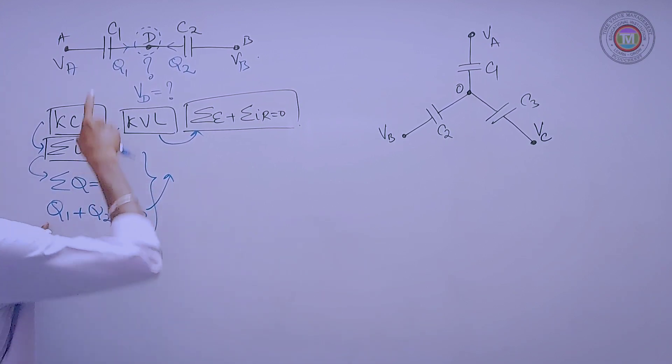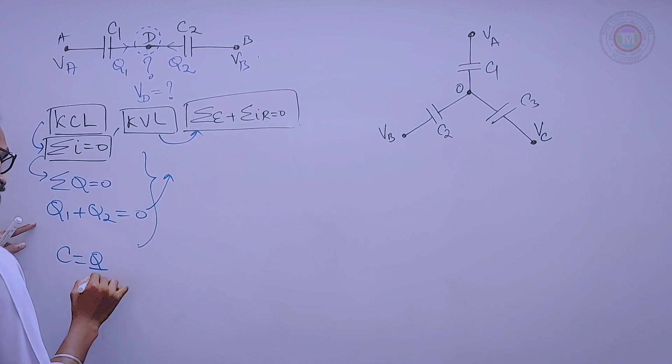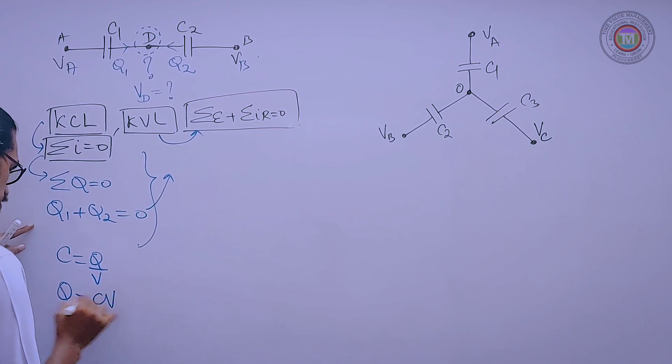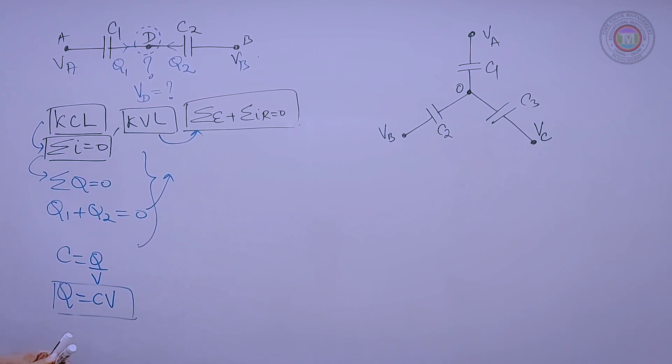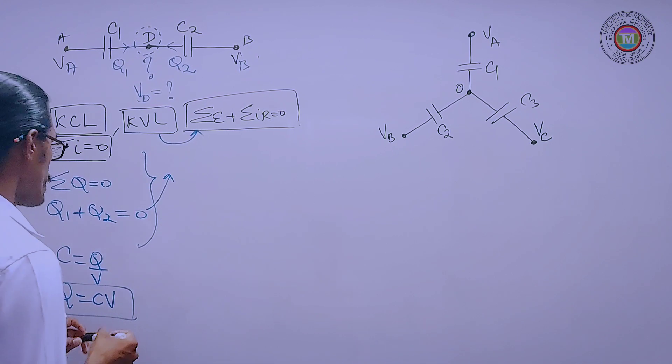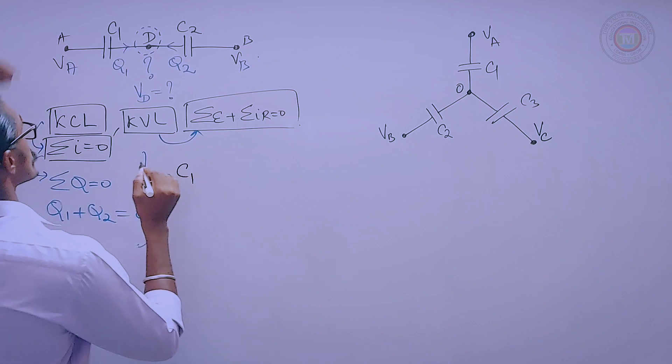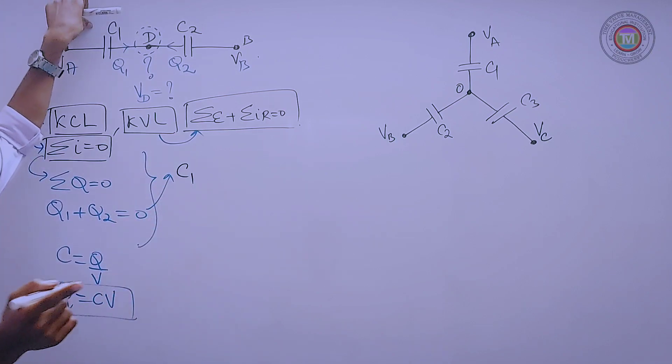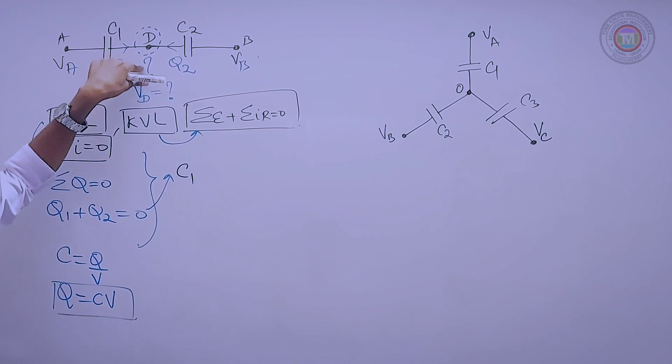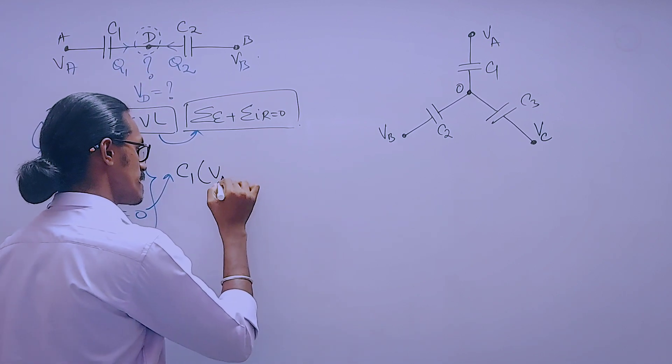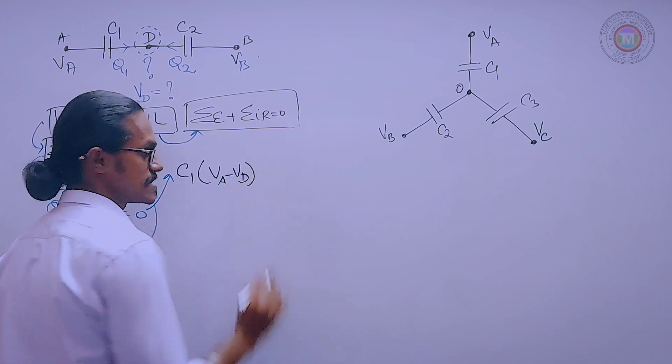What is Q1 according to our formula? C equal to Q by V, then Q is said to be CV. It is C times V. What is C here? It is C1 times for this capacitance, potential difference, higher minus lower potential. It is VA minus VD.